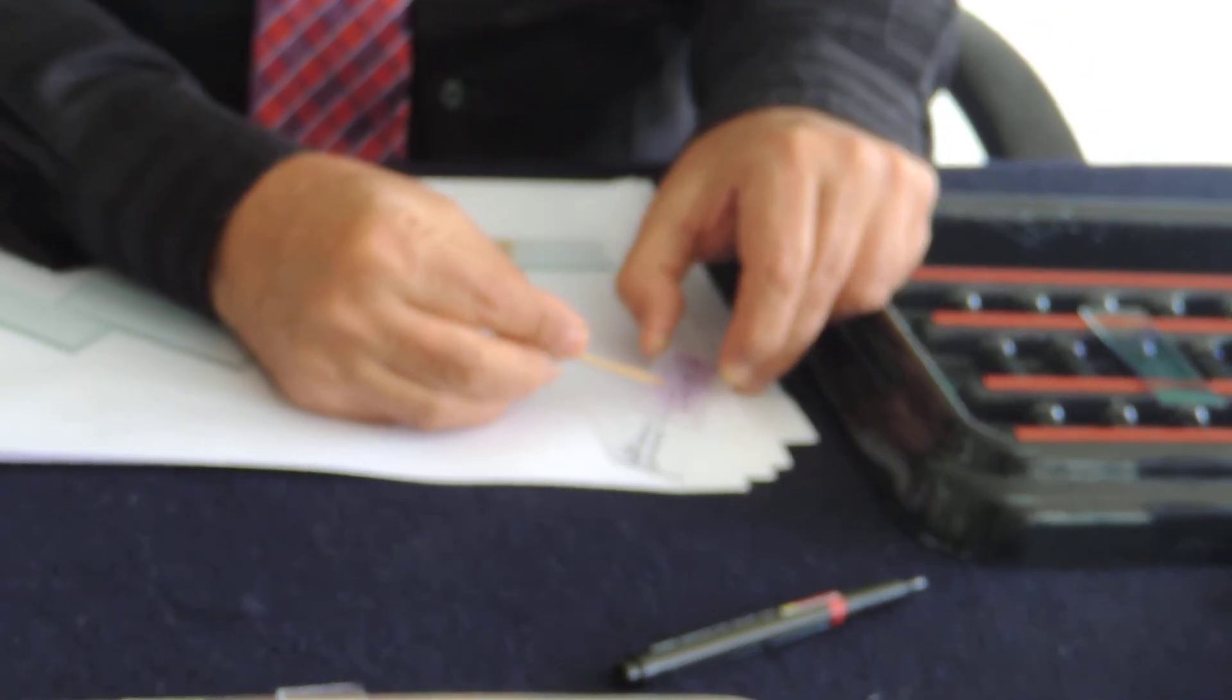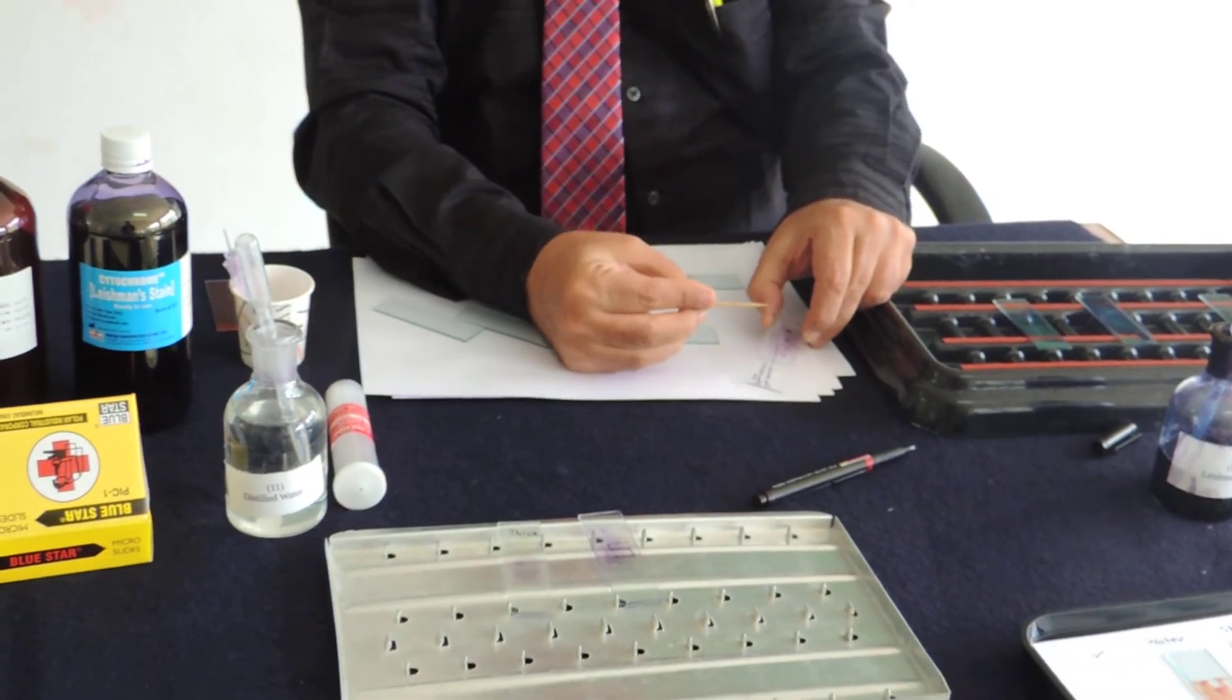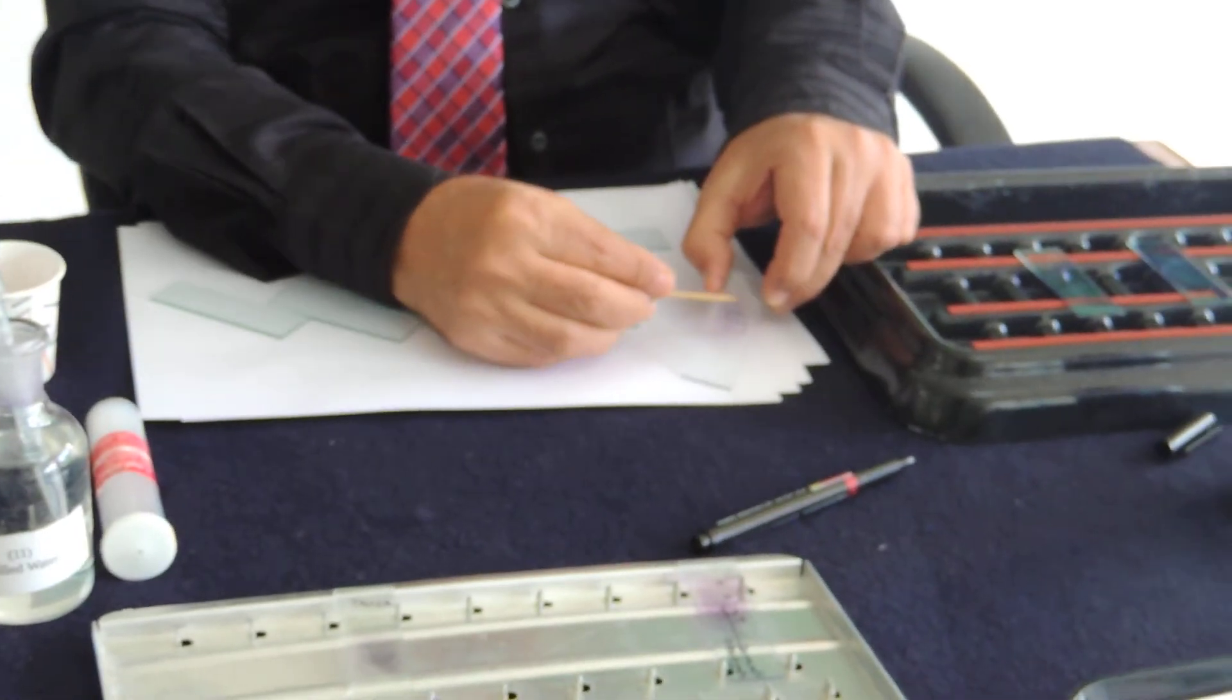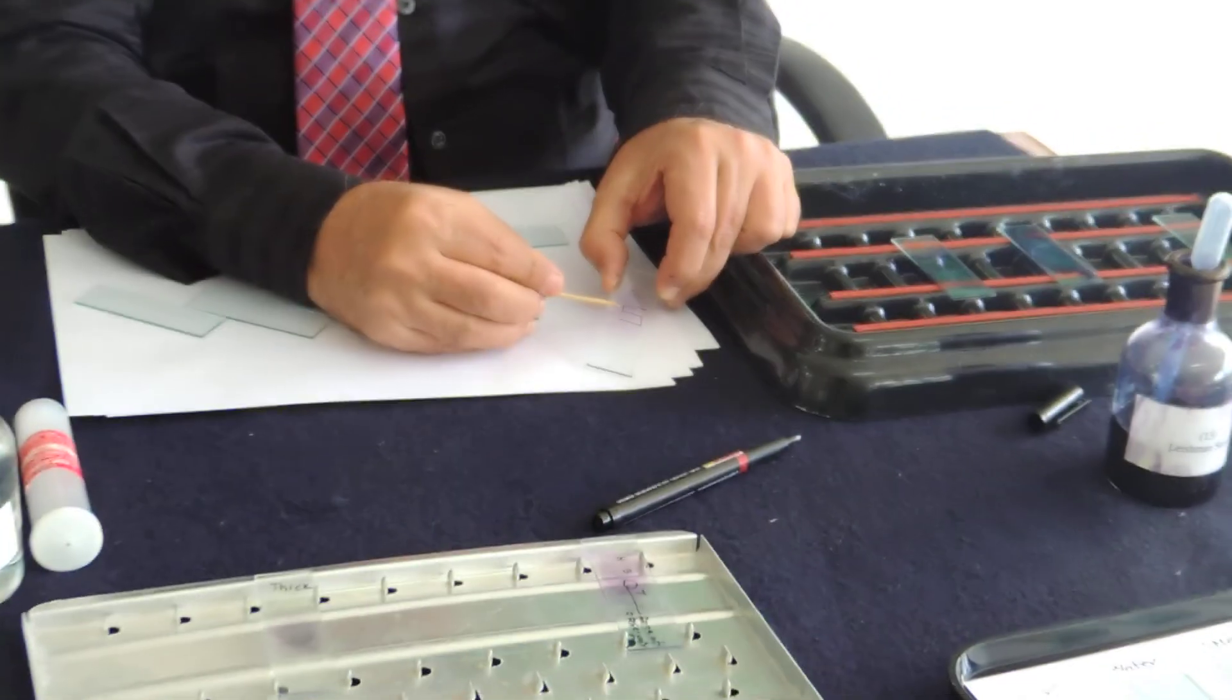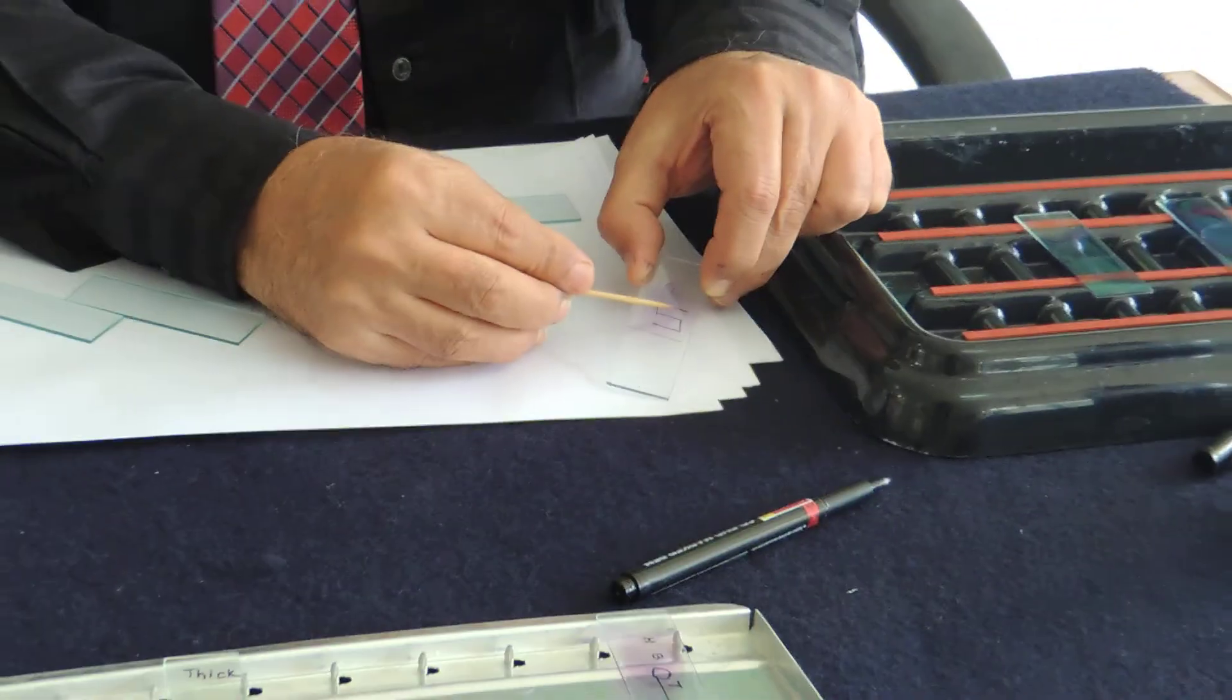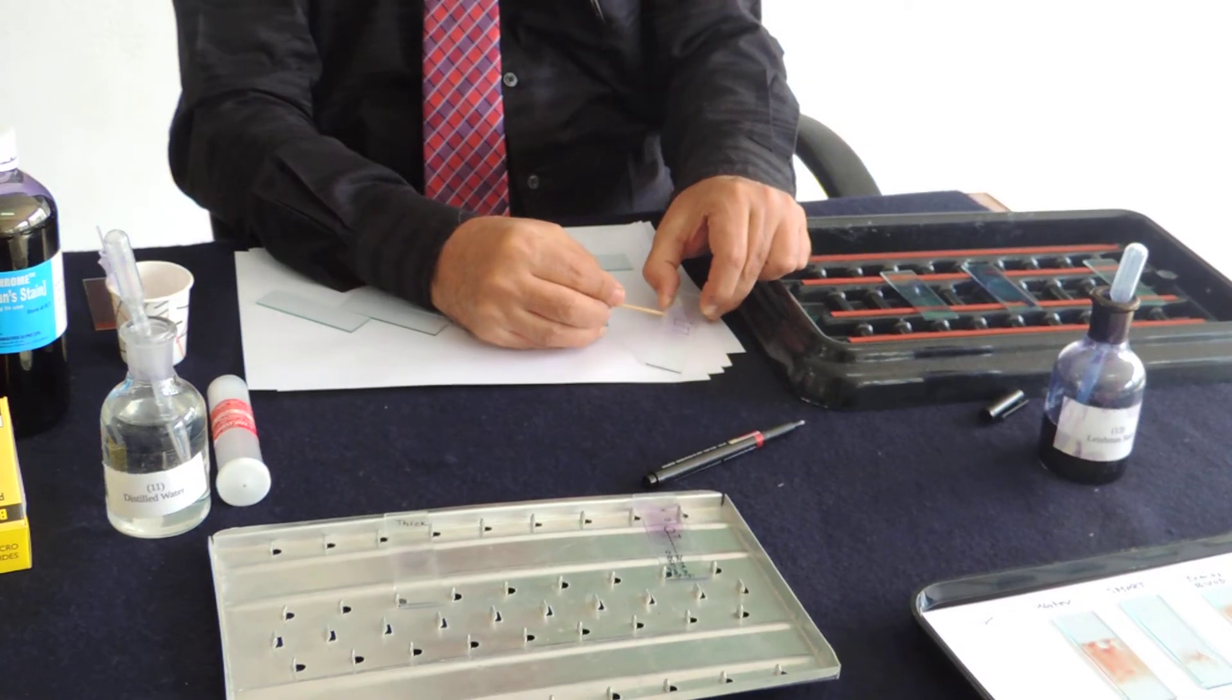So important thing, the smear has got head, body and tail. And the area of observation is about one centimeter before the tail. Then in case of differential diagnosis you have to observe in the ladder pattern or zigzag pattern for the differential count.